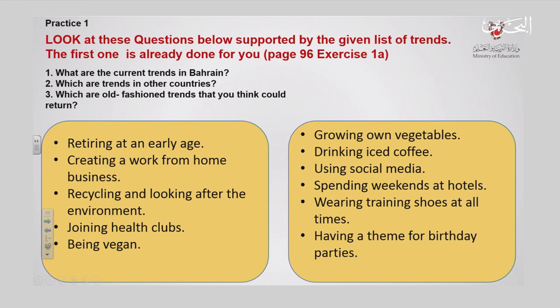In the two boxes here we see many different kinds of trends. For example: retiring at an early age, creating a work-from-home business, recycling and looking after your environment, joining healthy clubs, being vegan, growing your own vegetables, drinking iced coffee, using social media, spending weekends at hotels, wearing training shoes at all times, and having a theme for birthdays.